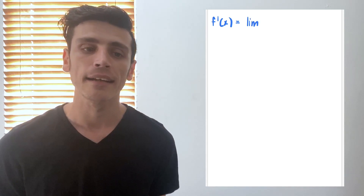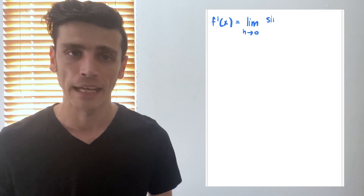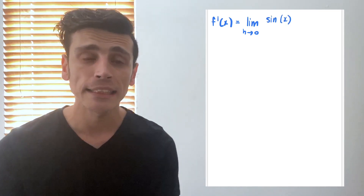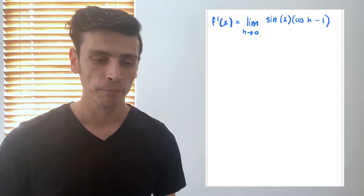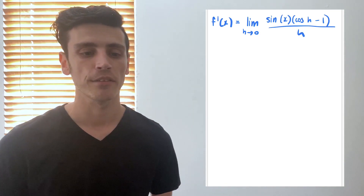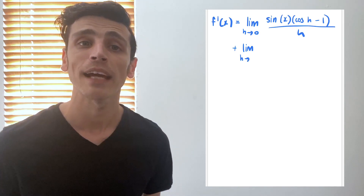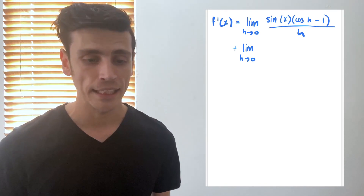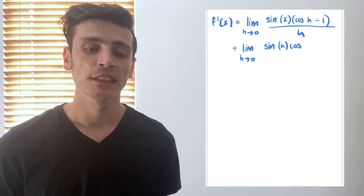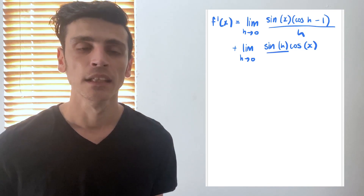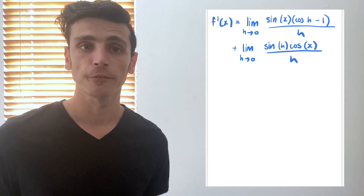I don't have to treat it any differently. So that's going to give us: the derivative function equals the limit as h approaches 0 of sine(x)·(cos(h)−1)/h, plus the limit as h approaches 0 of sine(h)·cos(x)/h. The limit values don't change — we're simply separating them as two fractions.